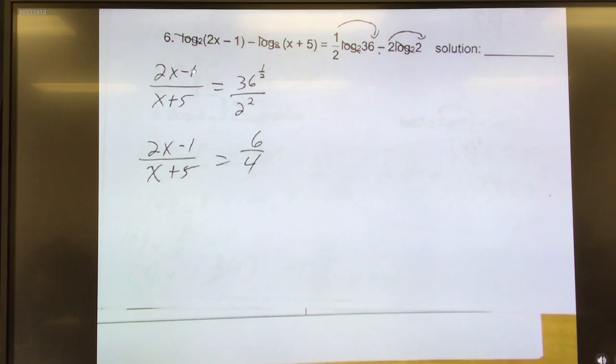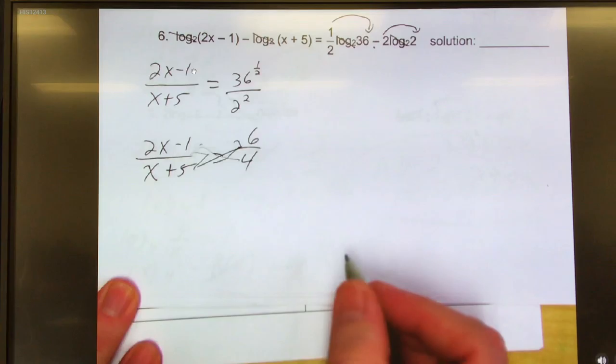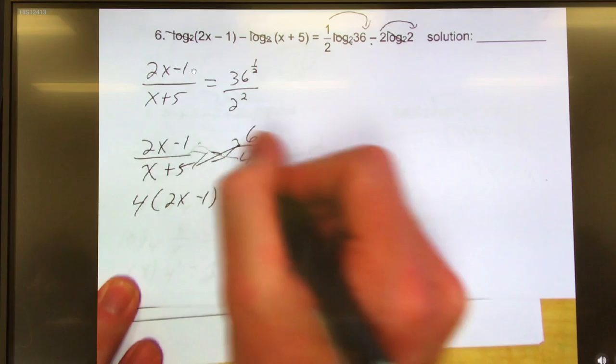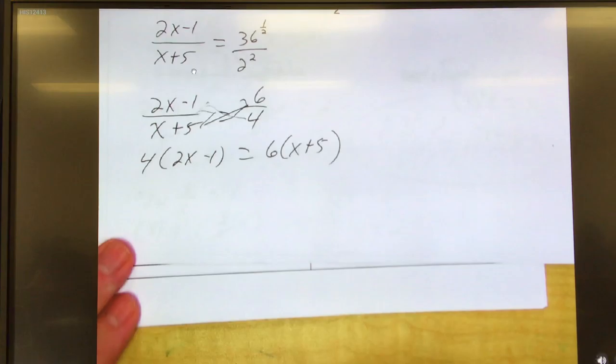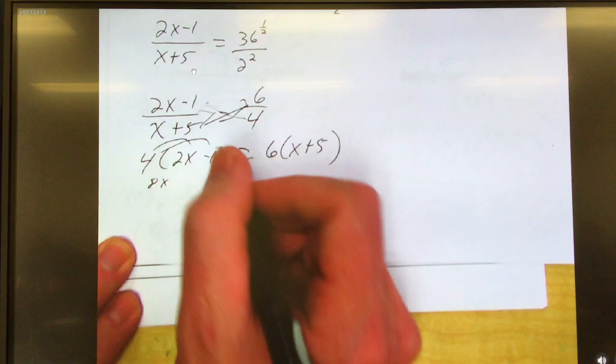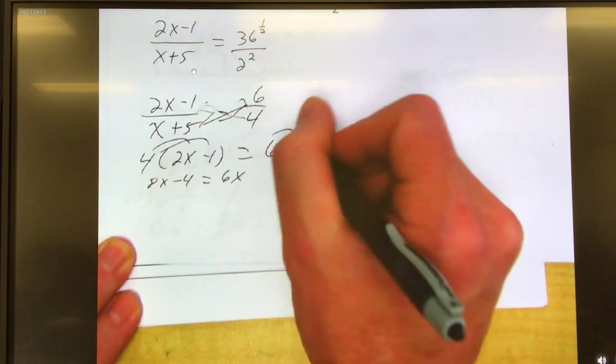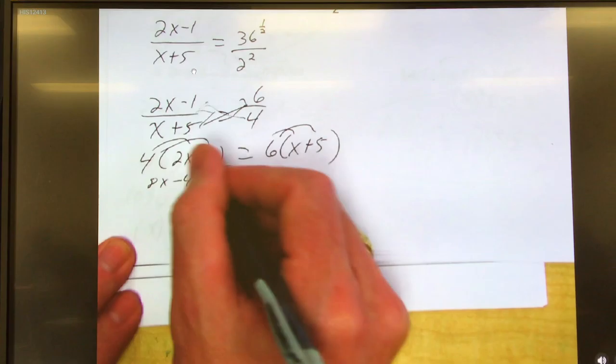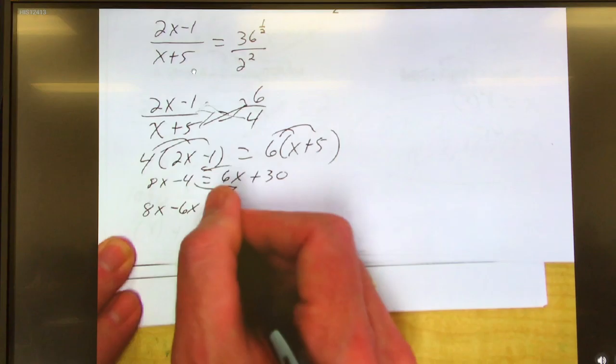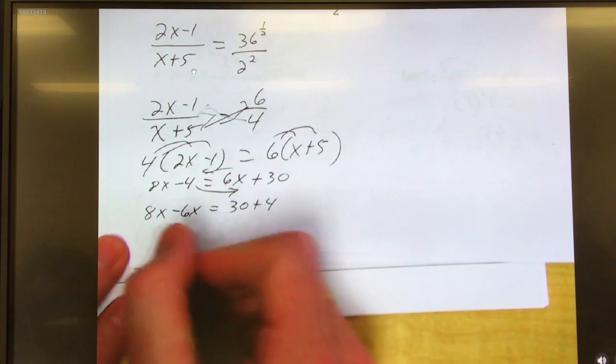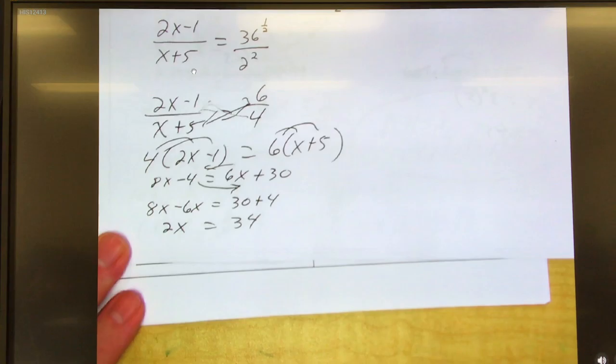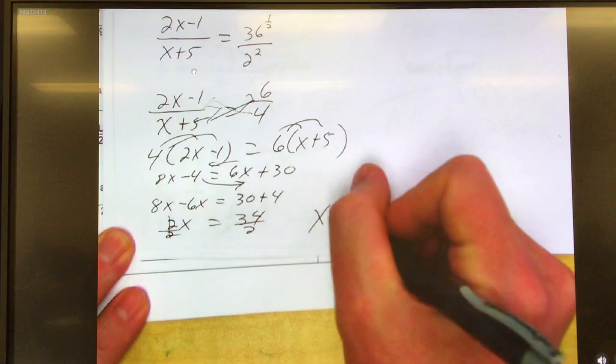2x minus 1 over x plus 5 equals 6 over 4. Any guesses on how we're going to solve for x? Y'all remember way back in algebra 1 how you did two fractions that were on the opposite side of the equal sign? The butterfly thing, cross multiplication. This one times that one and that one times that one. So it'll be 4 times 2x minus 1 equals 6 times x plus 5. 4 times 2x is 8x. 4 times negative 1 is negative 4 equals 6x plus 30. Moving x to one side, regular numbers to the other. 8x minus 6x equals 30 plus 4. 8x minus 6x is 2x equals 34. Divide by 2. x equals 17. Good job.